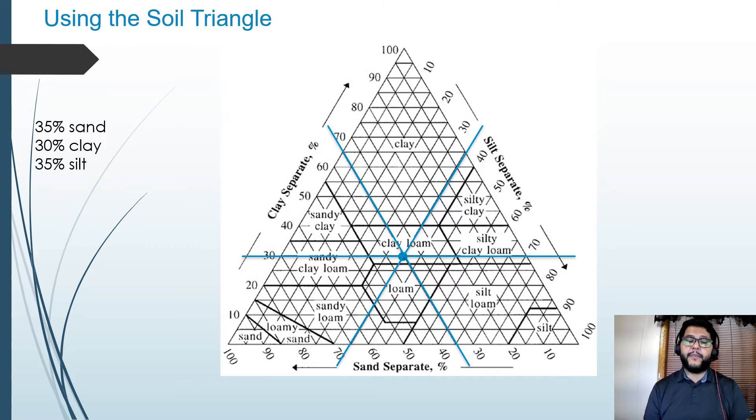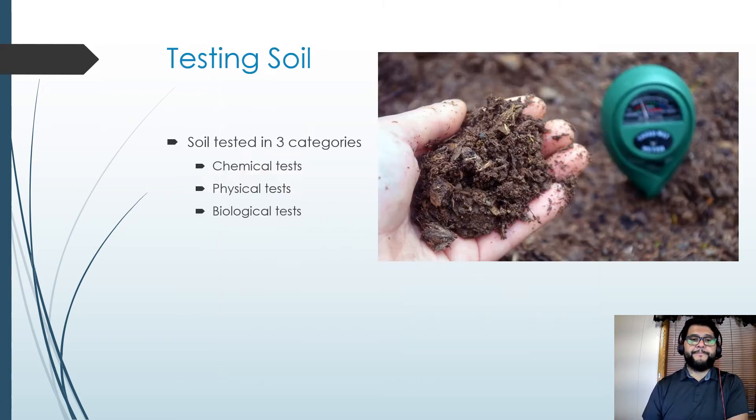The other way they might do this for you on the AP exam is they'll put a dot on there and have you determine the percentages from that one dot. You just do the same way: you draw the lines going to sand and then clay and then to silt to see where that ends up, what percentages those end up being.